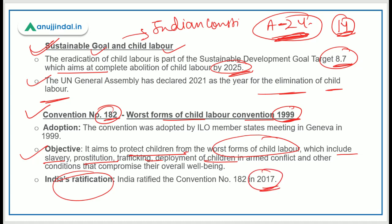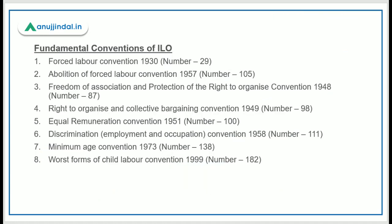Just remember these key points: the convention name, the convention number, that India has ratified it, and why it was in the news. There are a total of 8 fundamental conventions of ILO — International Labour Organization. Remembering all the numbers will be very helpful for exams as the number is sometimes directly asked.